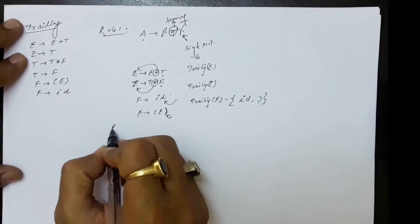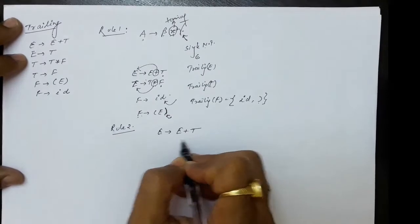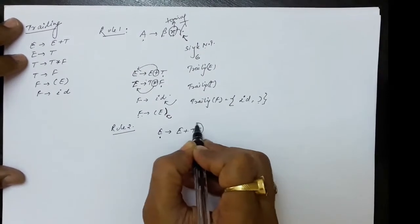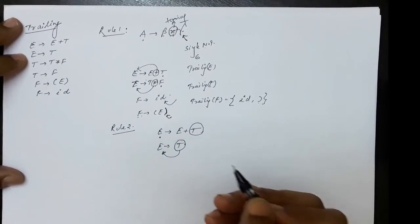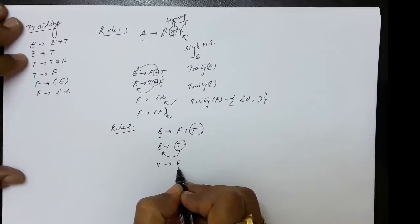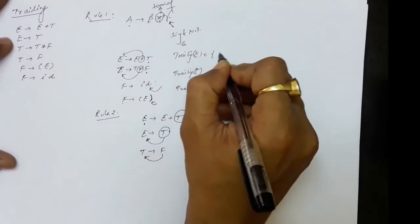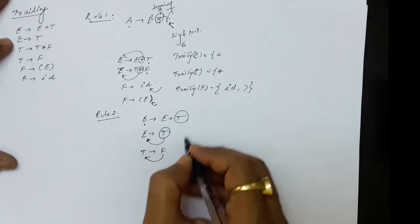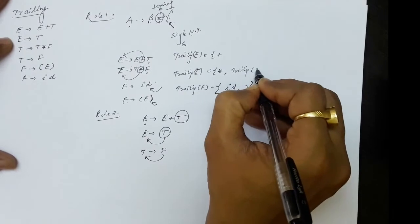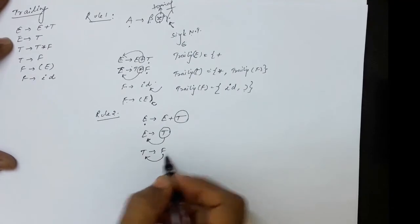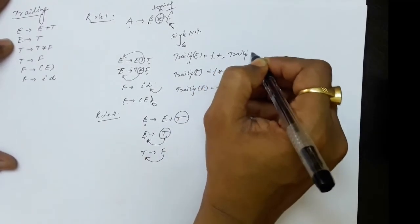So TRAILING of F has ID and closing parenthesis. Now by the propagation rule, for T produces F, every trailing symbol of F will be included in TRAILING of T. And for E produces E plus T, every symbol of TRAILING of T will be added in TRAILING of E. So TRAILING of T already has multiplication, and will also include TRAILING of F. TRAILING of E already has plus and will also include TRAILING of T.